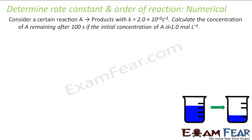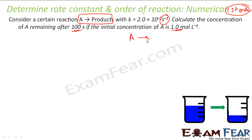Next question: a reaction A → product is given with a value of K. From the unit I can identify it as a first-order reaction. We need to find the concentration of A after 100 seconds, given that the initial concentration of A is 1 mole per liter. Let the concentration at T=100s be R.